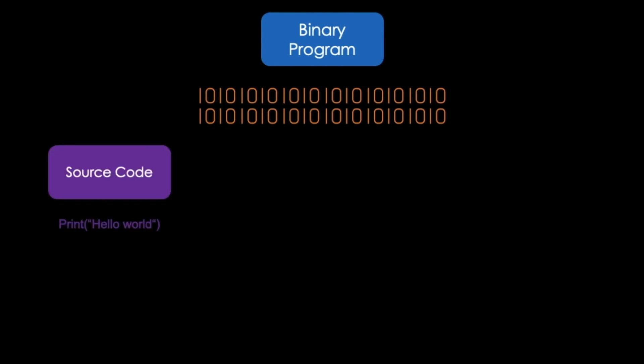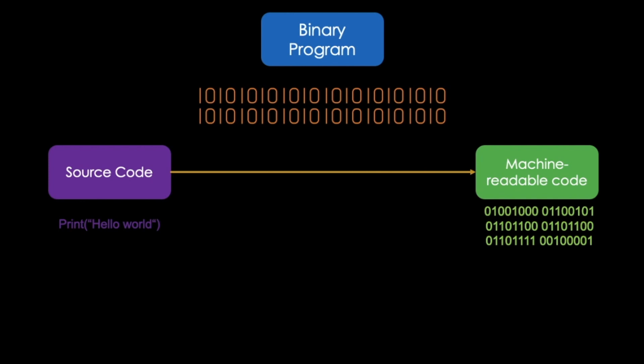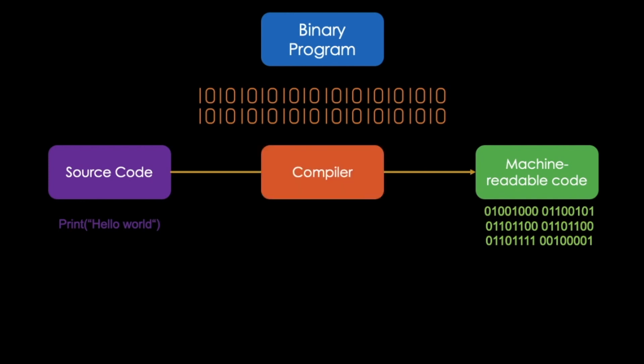When you are programming, your source code is normally written in a higher programming language, like the print statement displayed here. This code needs to be translated into a machine-readable format, so a binary language code. This is where the compiler comes into the game. It translates our source code into machine-readable code, also referred to as object code or target language.